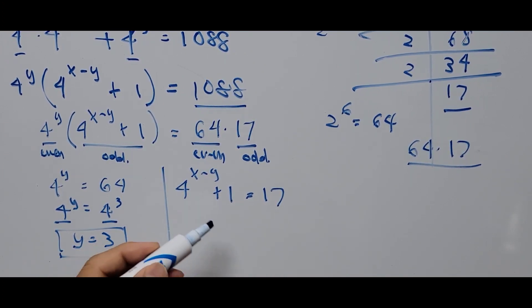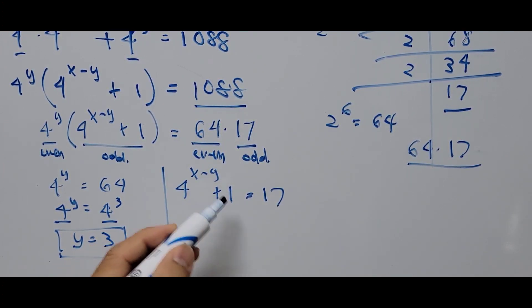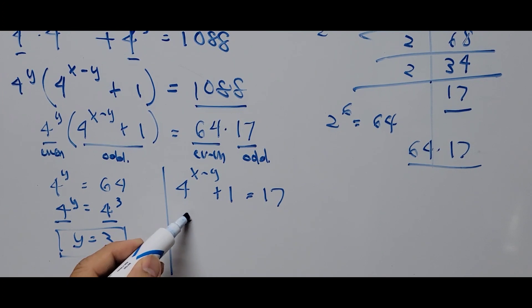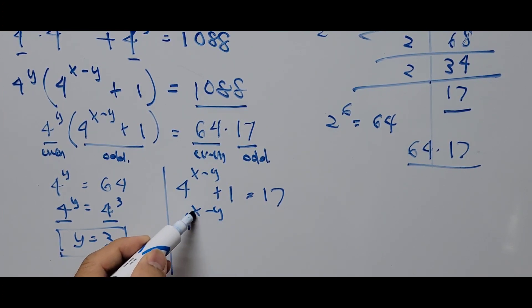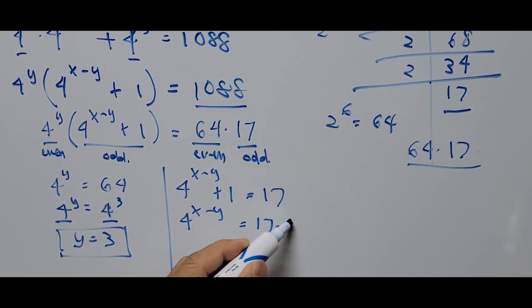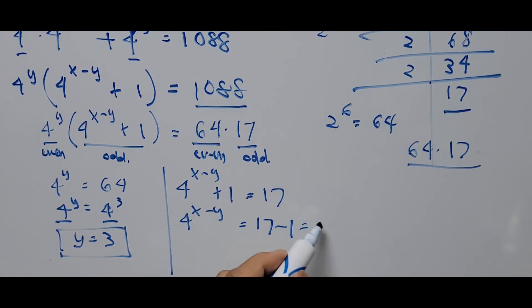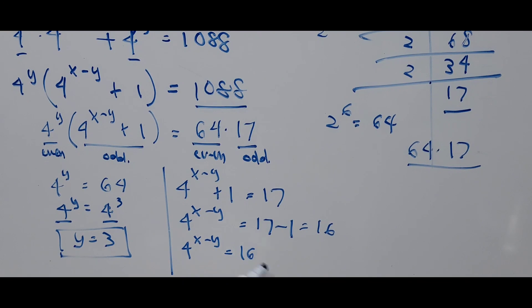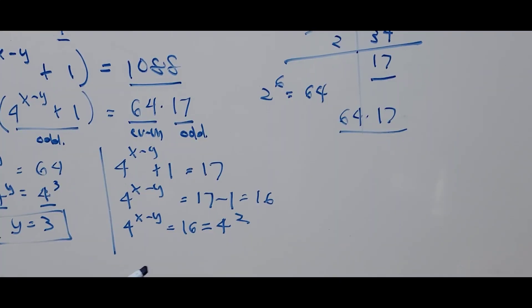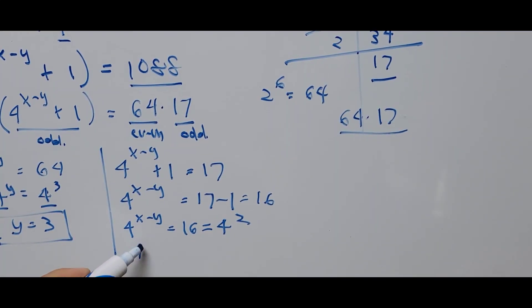For the other equation: 4 to the power of (X minus Y) plus 1 equals 17. Transposing 1 to the other side gives 4 to the power of (X minus Y) equals 16. And 16 can be written as 4 squared, so the equation becomes 4 to the power of (X minus Y) equals 4 squared.